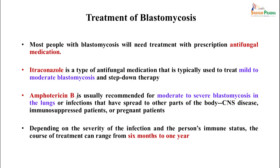Treatment of blastomycosis: itraconazole is typically used for mild to moderate disease and as step-down therapy. Amphotericin B is recommended for moderate to severe blastomycosis, especially with CNS involvement. Treatment duration ranges from 6 months to 1 year depending on the severity of infection and the patient's immune status.